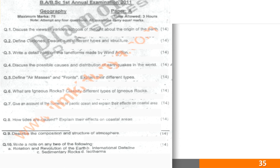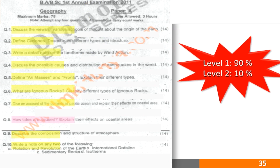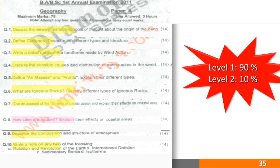Another example of a paper from bachelor's degree program, this subject is geography. In this paper, 90% of the questions are from level 1 while 10% of the questions are from level 2. All these papers are showing something wrong or not aligned with the learning outcomes.